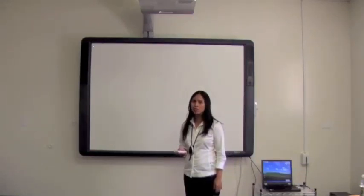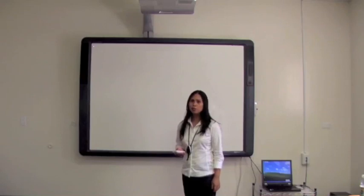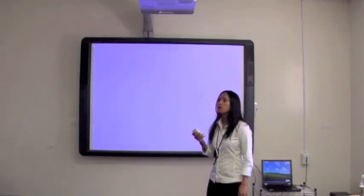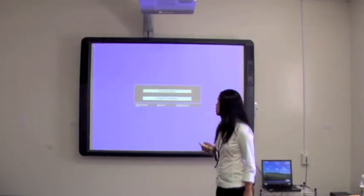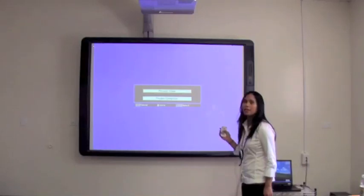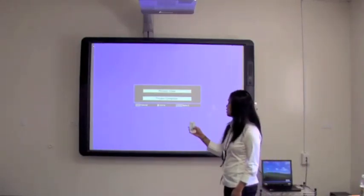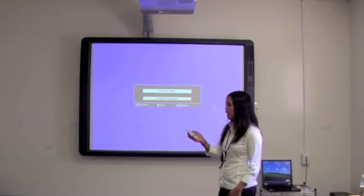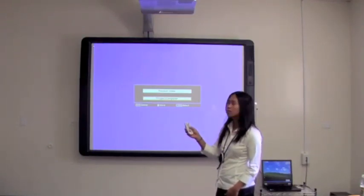Now that you have your cords plugged in, the next step is to power on your projector. To power on your projector, simply press the power button on your remote control. Once the projector is up and running, you will come across a screen that looks like this. What you'll need to do is use your down arrow to select Project Computer, and then press the Select button.